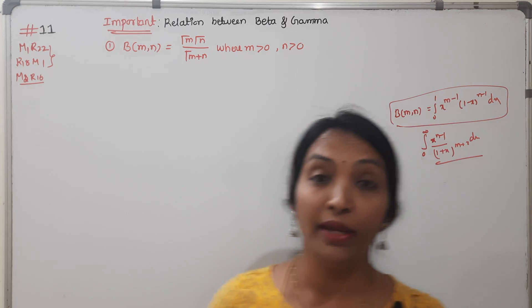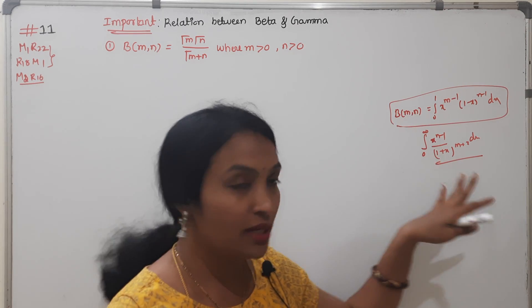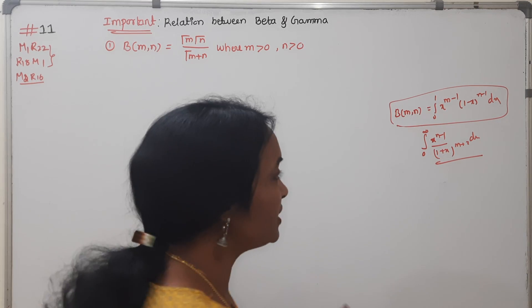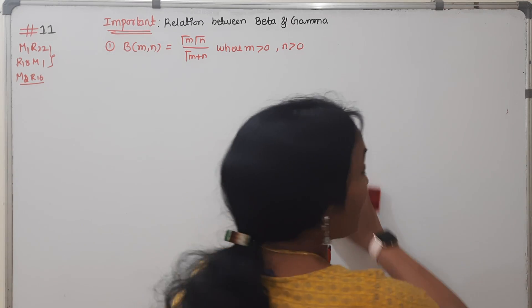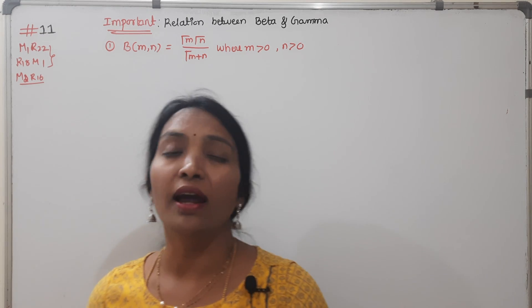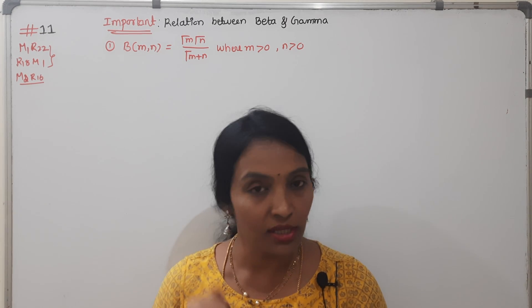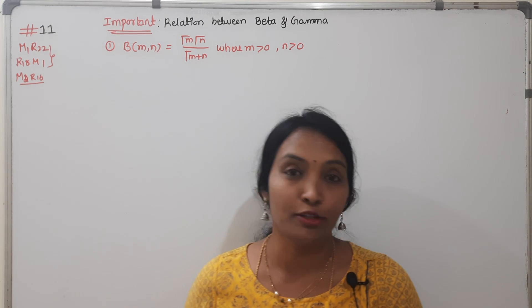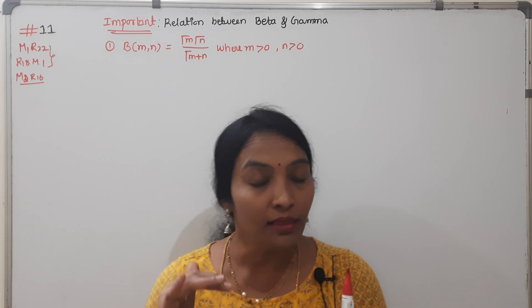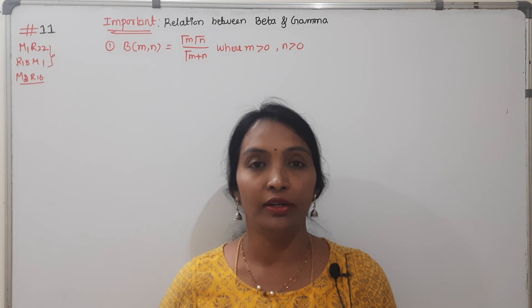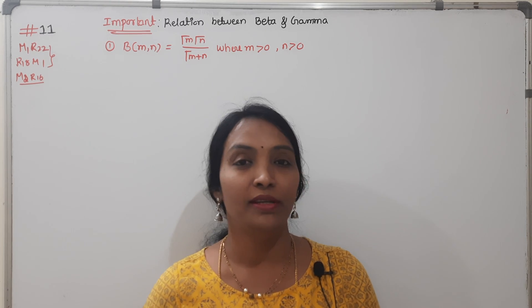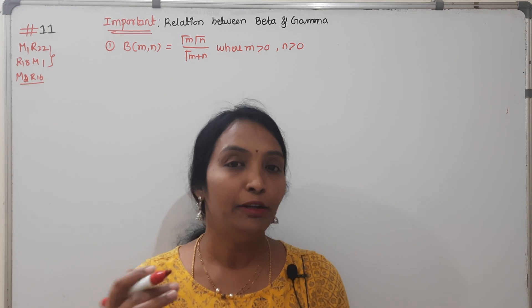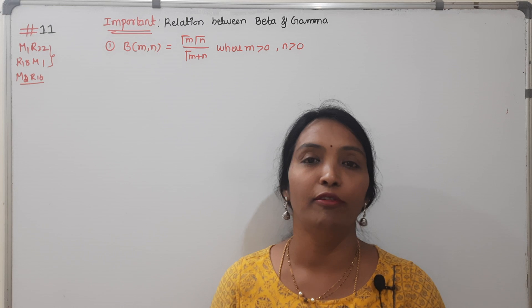This is the Beta first form: integral from 0 to infinity of x^(n-1) divided by (1+x)^(m+n) dx. This is very important — we have a 99% chance this comes in exams. This is the best way to watch this video; you don't have to read it in the textbook. It's crystal clear. Like, share — compulsory. You are maximum friends from different colleges.